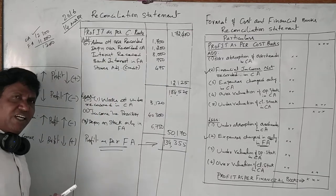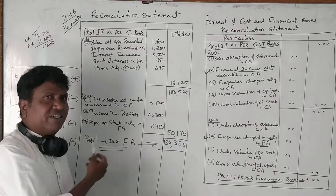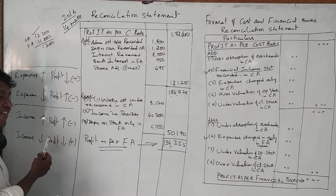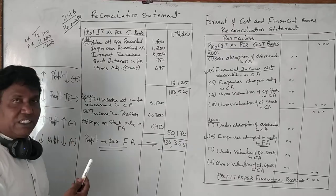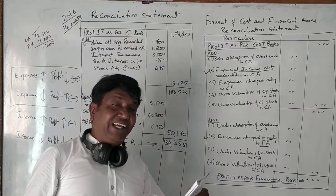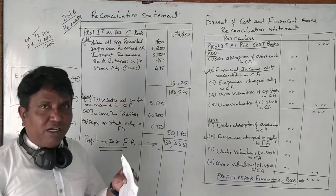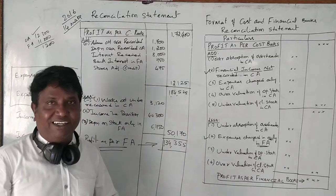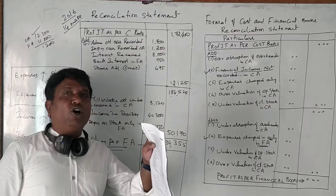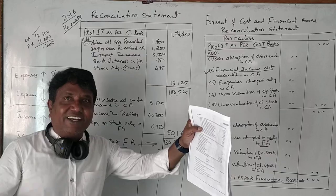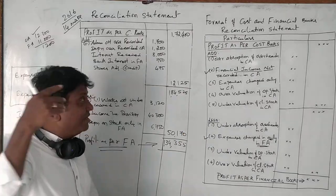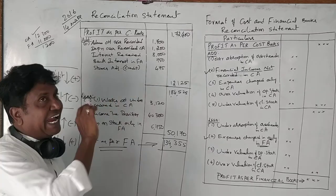Interest received cannot be included in cost accounting because it is income — income is recorded separately under financial accounting rules. Bank interest credited is also income. The accounting rule is: debit all expenses and losses, credit all incomes and gains. So incomes are added.